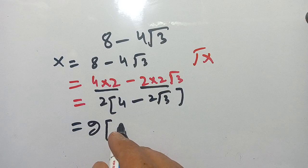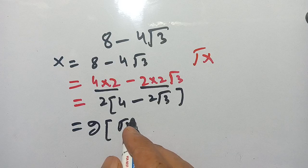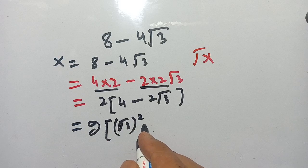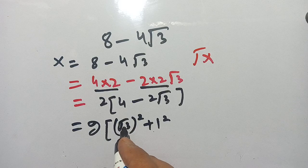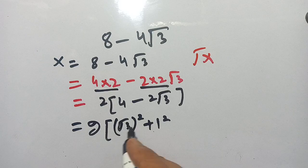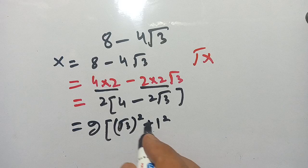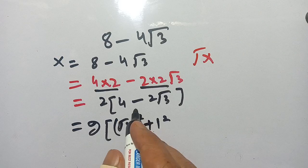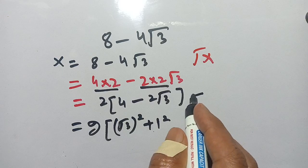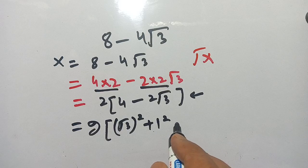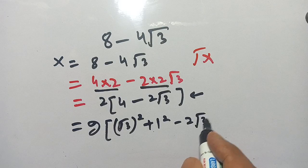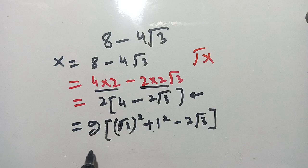In the next step, this 4 can be written as (square root 3) squared plus 1 squared, because (square root 3) squared equals 3, and 1 squared equals 1, and 3 plus 1 equals 4. So it does not impact our previous term. Now we get minus 2 square root 3.